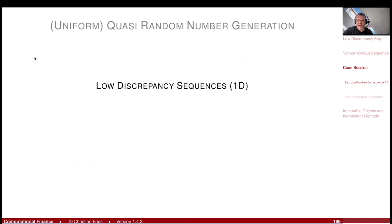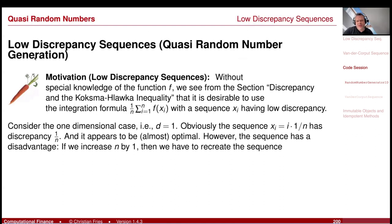We start with one-dimensional low discrepancy sequences. From the Koksma-Hlawka inequality, we see that it is desirable to use a sequence that has low discrepancy for our Monte Carlo integral, and I would like to have such a sequence.